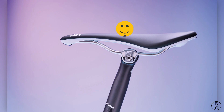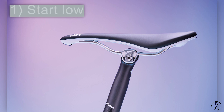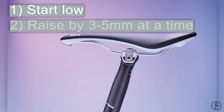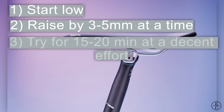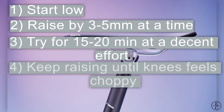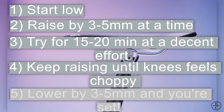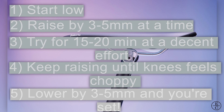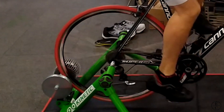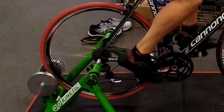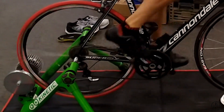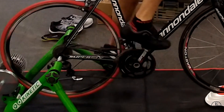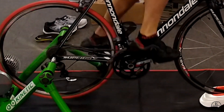To set up saddle height correctly on your own, it's best to start low. Raise the saddle about 3 to 5 millimeters at a time, and ride for about 15 to 20 minutes at a good effort. Keep raising it until you feel like your knee starts to feel choppy at the bottom of the pedal stroke, then start lowering it by about 3 to 5 millimeters. That should get you there. It would be ideal to film yourself on a trainer so you can have some visual feedback, as sometimes our proprioception or body awareness of our joints isn't going to be 100% reliable.